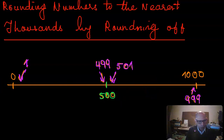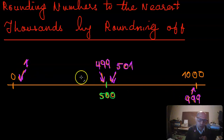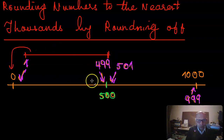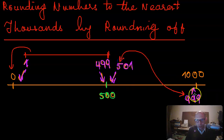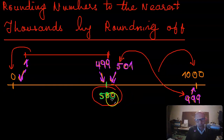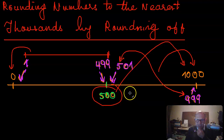By the same logic, all numbers from 1 to 499 are rounded to zero when rounding to the nearest thousands. All numbers from 500 up to 999 are closer to 1000, so they are rounded to 1000. The number 500, being exactly halfway between zero and a thousand, is also rounded up to a thousand.